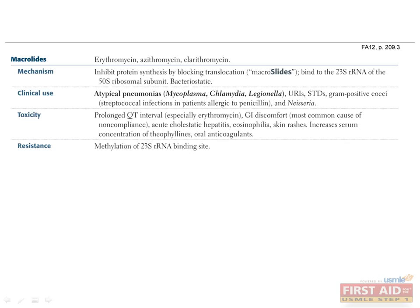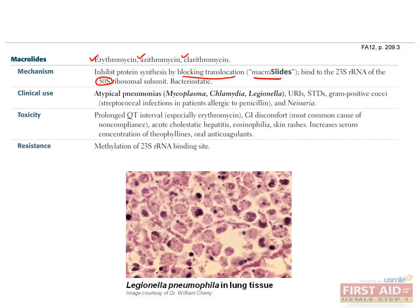The macrolides are erythromycin, azithromycin, and clarithromycin, which inhibit protein synthesis by blocking translocation. These bacteriostatic antibiotics bind to the 50S ribosomal subunit and are used to treat atypical pneumonias, upper respiratory infections, sexually transmitted infections, streptococcal infections, and Neisseria. An interesting fact about macrolides is that they accumulate within leukocytes, which then conveniently transport them to the site of infection.